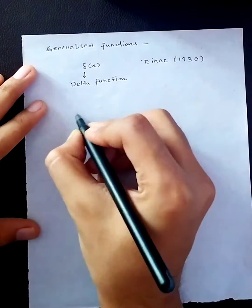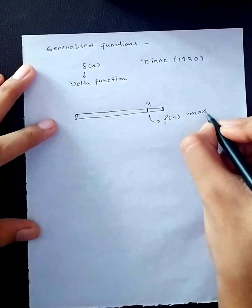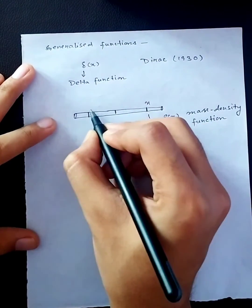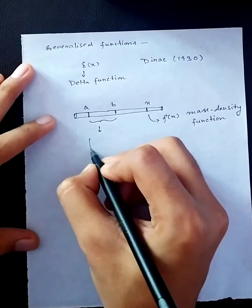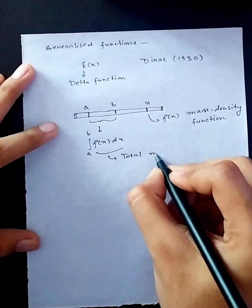To understand it, we consider a classical example of a rod of non-uniform thickness. We introduce a mass density function rho x which gives mass per unit length of the rod at a point. The mass of any section of the rod A to B is obtained by integrating the mass density function. This method works perfectly fine for a continuous distribution of mass along the rod.